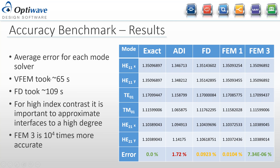Looking at the average error in the bottom row: using the fiber vector solver as exact, the FD gets about 0.1% average error over six modes for the effective modal index. The finite element using first-order basis functions is about 0.01% — roughly ten times more accurate. The third-order basis functions are about ten thousand times more accurate than the finite difference method, largely due to the much more accurate approximation of the circular geometry.